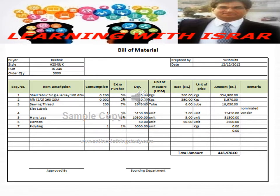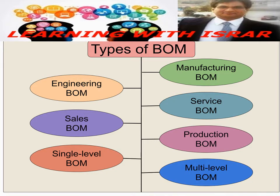This is a simple illustration of a Bill of Material. It has fields for the buyer, the style, the purchase order number, the order quantity, who prepared it, and when. The main body includes a sequence number, item description, consumption, extra quantity to purchase, quantity, unit of measure — such as case, pound, kg, or each — then rate, unit price, amount (quantity multiplied by unit price), total amount, remarks, and at the bottom, approvals and the sourcing department.